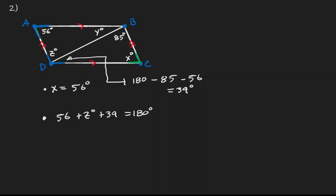Now that I know the value of this angle, I can apply another property of parallelograms: adjacent angles are supplementary. So I can set up the equation: 56 plus angle Z plus 39 must be equivalent to 180 degrees. Doing the math — taking away 56 and 39 — Z is equivalent to 180 minus 56 minus 39, therefore angle Z is equivalent to 85 degrees.